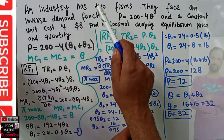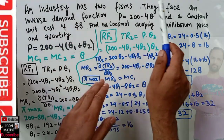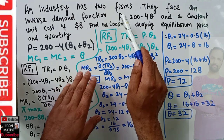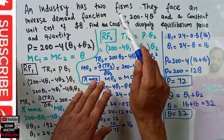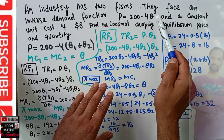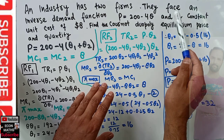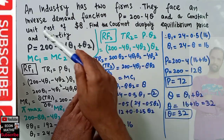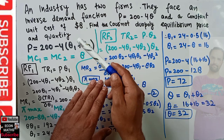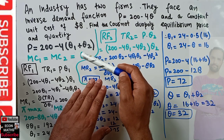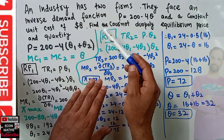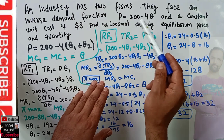The question is: an industry has two firms. They face an inverse demand function P = 200 minus 4Q, where P is the market price and Q denotes the total output of the two firms. They have a constant unit cost — that means a constant marginal cost of eight dollars each.